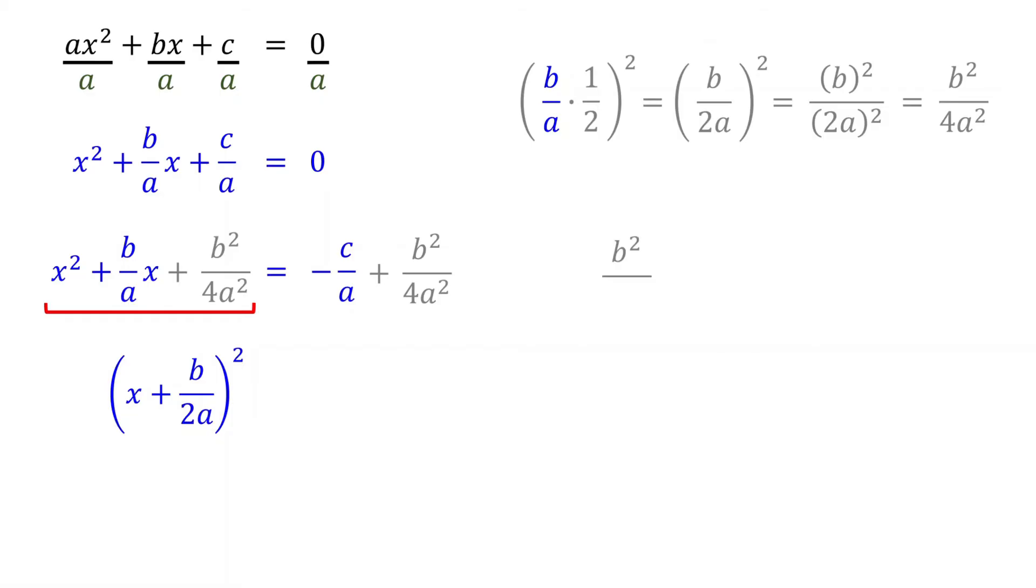On the right side, add the fractions. Notice that adding negative c over a is the same as subtracting c over a. To get a common denominator, multiply c over a by 4a over 4a.